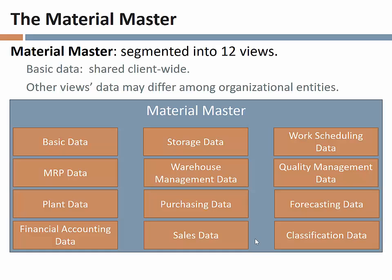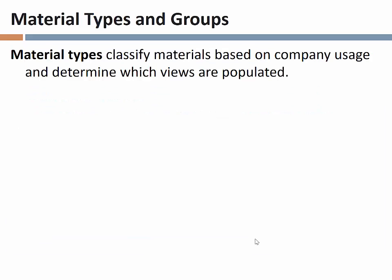One of the things tracked on the material master is the material type. The material type classifies materials based on how we use them, and it determines which views are populated for a given material.